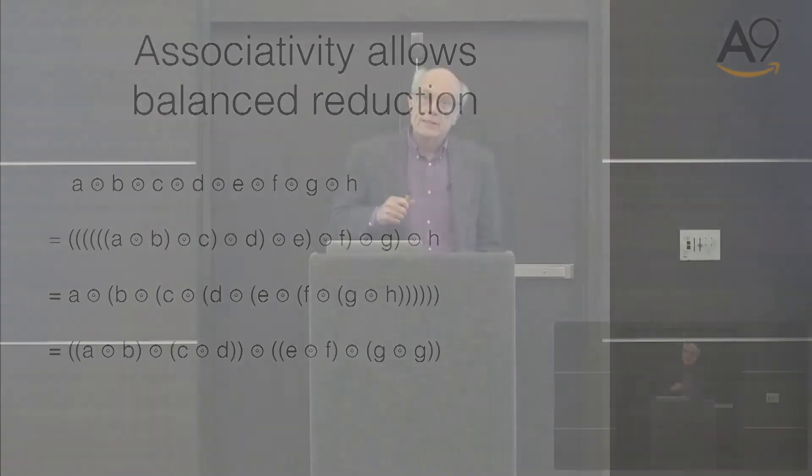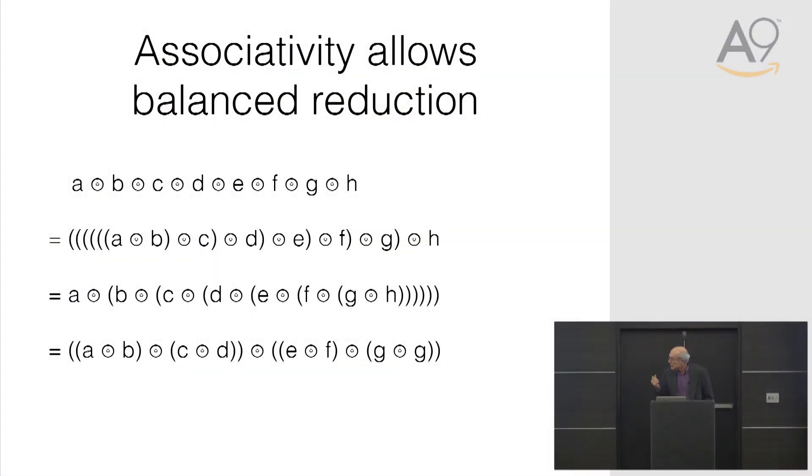Alex observed that the liberty to move the parentheses around without changing the overall value of the expression means that, for example, you could come up with a balanced tree. Alex was thinking about parallel execution at the time — this was the 1970s, and parallel computers were one of the important things to think about. A parallel expression tree would have the most opportunity for concurrent operation, and even in a sequential setting it can quite often be a good way to proceed.